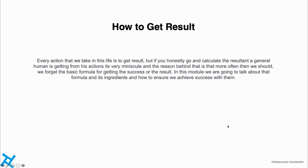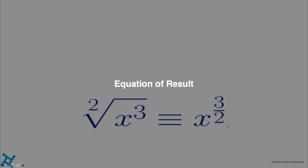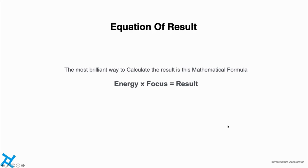This is a very important module because it teaches you not only how to be successful in an IT infrastructure career, but actually how to be successful overall in your life. Let's get started. Every action we take in life is to get some result, but if you honestly calculate the results a general human is getting from their actions, it is very minuscule. The reason is that we often forget the basic formula of getting success. In this module we are going to talk about that formula — the equation of result — and how to get energy and focus.